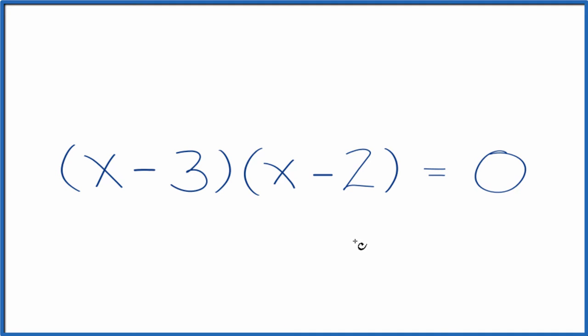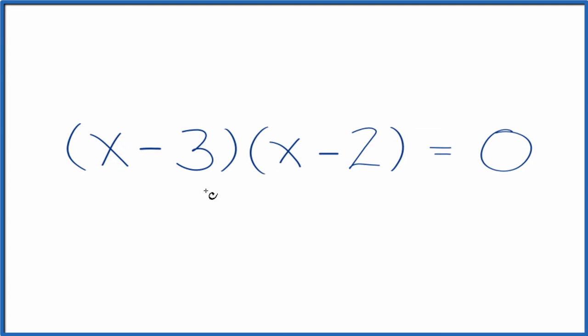Or you can think of this as the distributive property. x multiplied by everything in parentheses, and then negative 3 multiplied by everything in parentheses. So we have x times x,